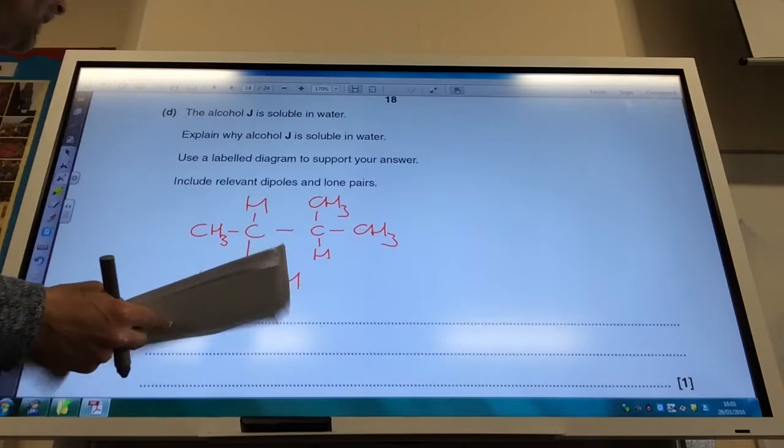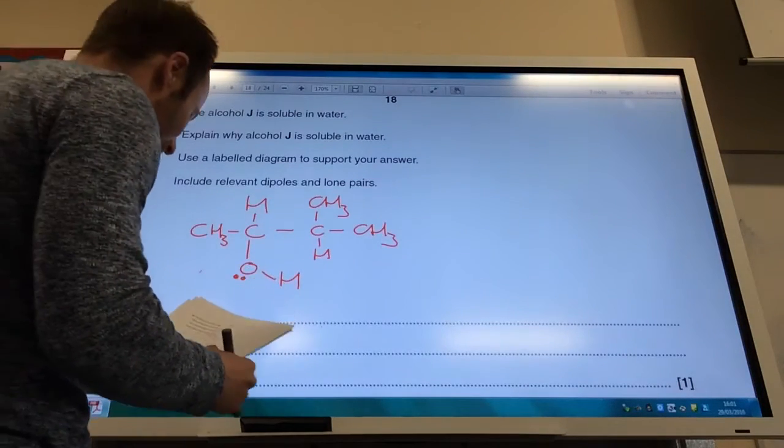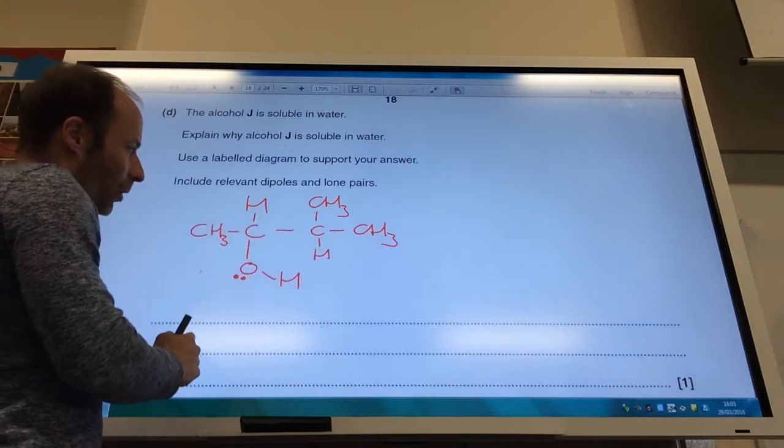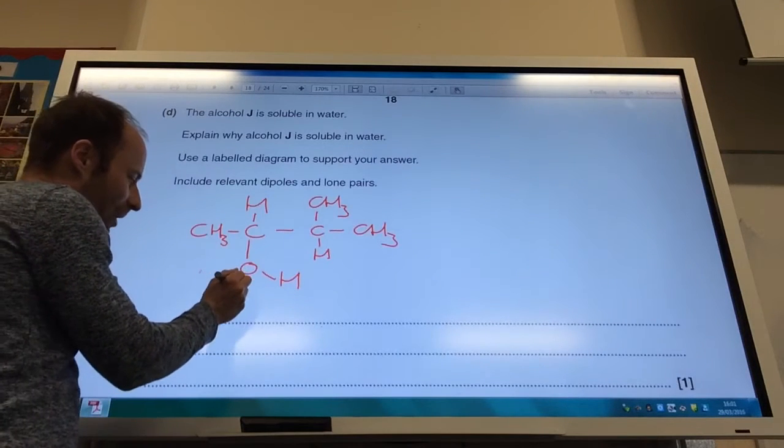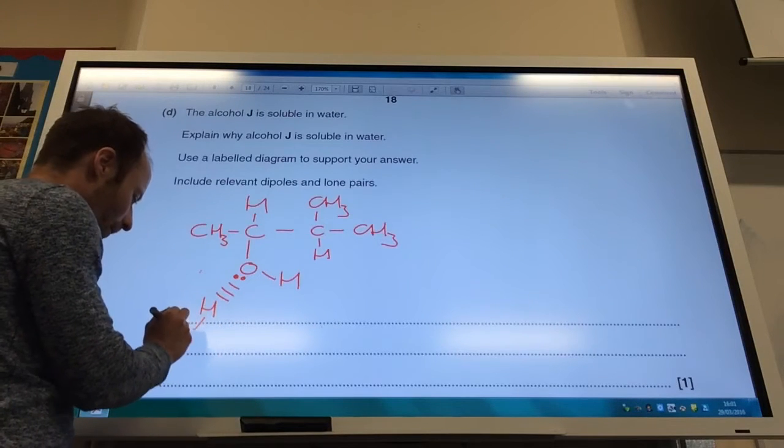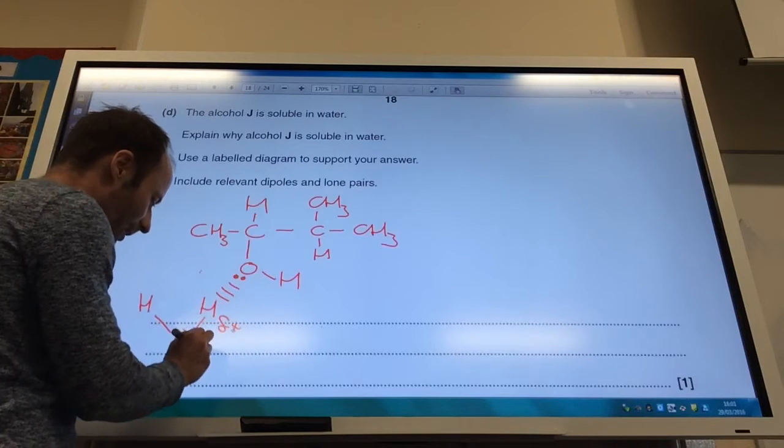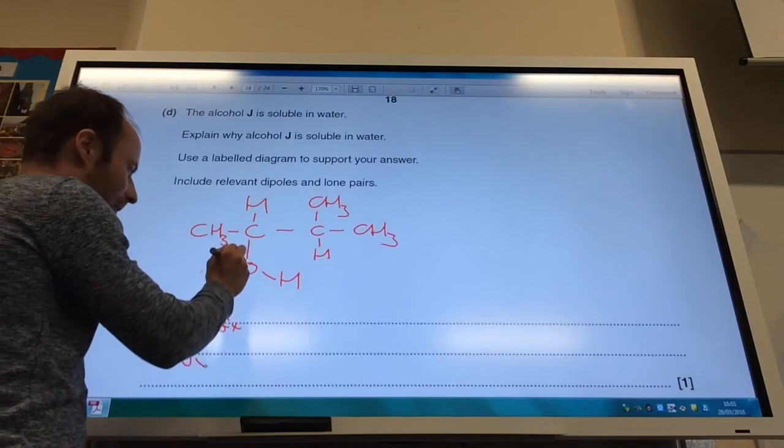Right, so, alcohol J is soluble. I explain why it's soluble in water using a labeled diagram. That's your alcohol there. Obviously, you can hydrogen bond this to a water molecule. Don't forget your dipoles.